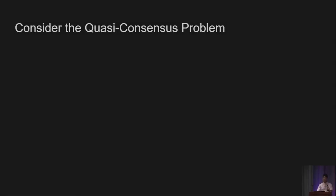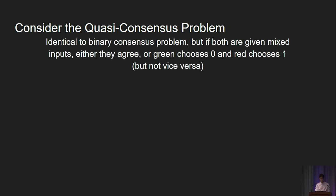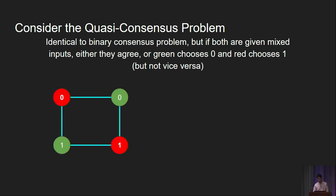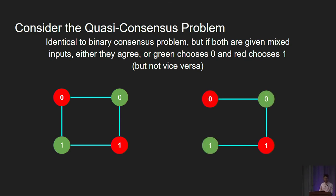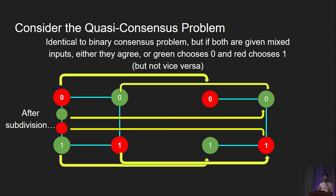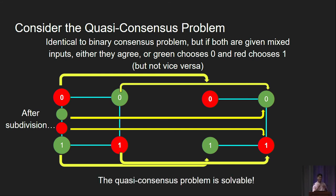What is interesting is that if we consider a variant called the quasi-consensus problem — which is identical except that when both nodes are given mixed inputs, they can either agree, or green can choose 0 and red can choose 1 — the output complex is now different. We now have an extra simplex for red 1, green 0, because that is now a possible output. With this new simplex, red 0 and green 1 on the right are now connected. In fact, we can find the required subdivision and the required simplicial map that fit the delta requirements, and by the asynchronous computability theorem, the quasi-consensus problem is solvable.